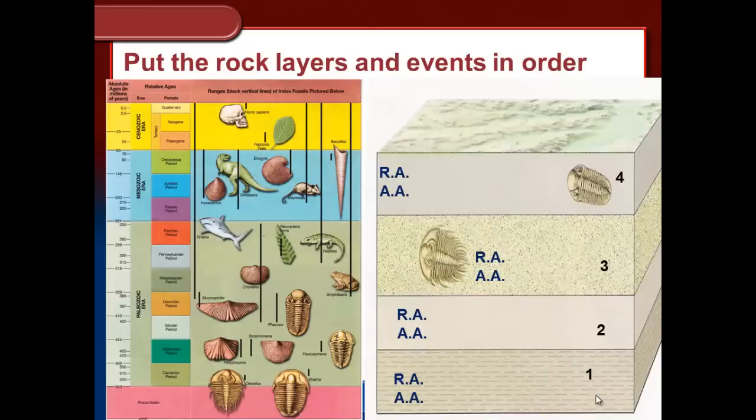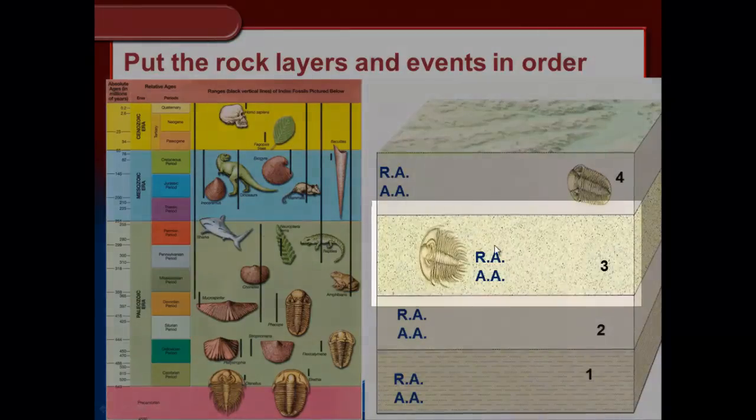If there are certain fossils inside layers, we can actually start to put an age — or a date, I'll get to the difference in a minute — to these rock layers: how far in the past did this rock layer form. We've been working on relative age, and now we're going to start working into something known as absolute age or absolute dating.